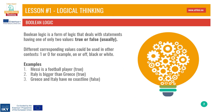Boolean logic. Even though much of our reasoning is inductive, computers are not well equipped to deal with shades of grey. Their binary nature makes them more apt to deal with black and white issues. In order to instruct computers to make logical decisions, we need a system of logic that maps well onto this way of thinking. Boolean logic is such a method. It's a form of logic that deals with statements having one of only two values: true or false. Different corresponding values could be used in other contexts — 1 or 0, on or off, black or white.